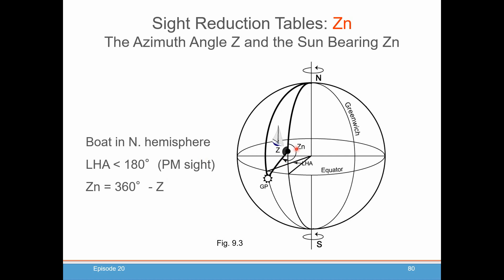If instead it's an afternoon sight, here's the spherical triangle again. Here's your boat going up to the north pole, going down to where the sun is, and then back to your boat. Z is going to measure the angle from your pole within the triangle. But your Zn is this larger angle. That tells you why in the northern hemisphere, if your LHA is less than 180 — an afternoon sight — you have to take 360 minus Z to get your Zn.